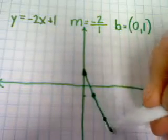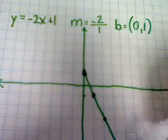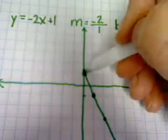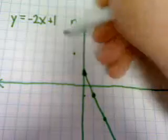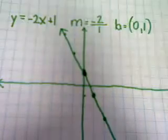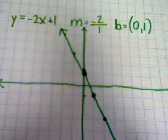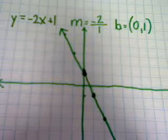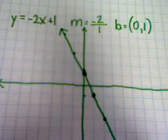After we've done the right side of the line, we're going to continue this pattern on the left side so that we have a nice straight line. And this is the graph of the equation y equals negative 2x plus 1.